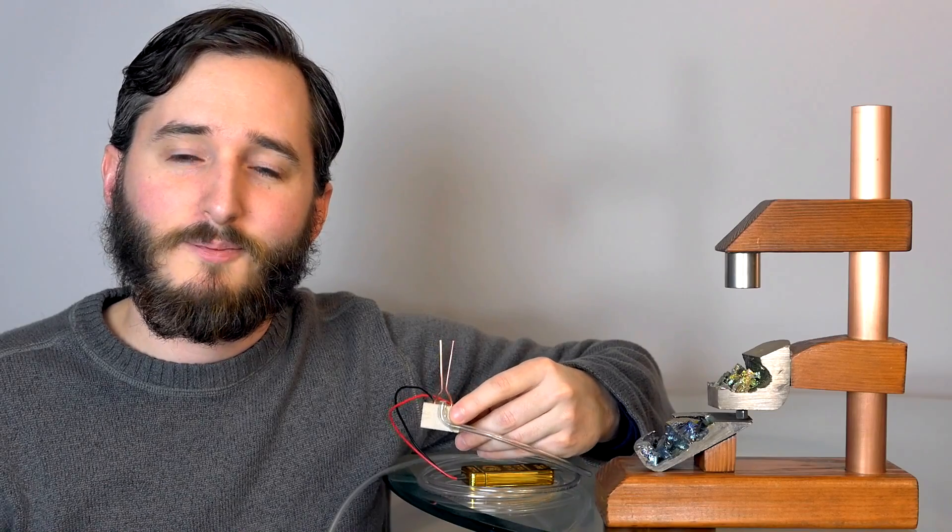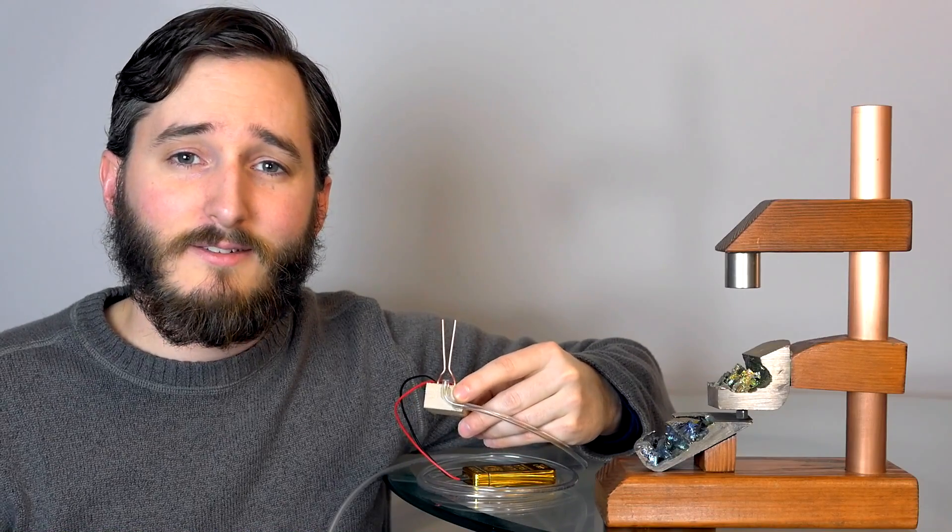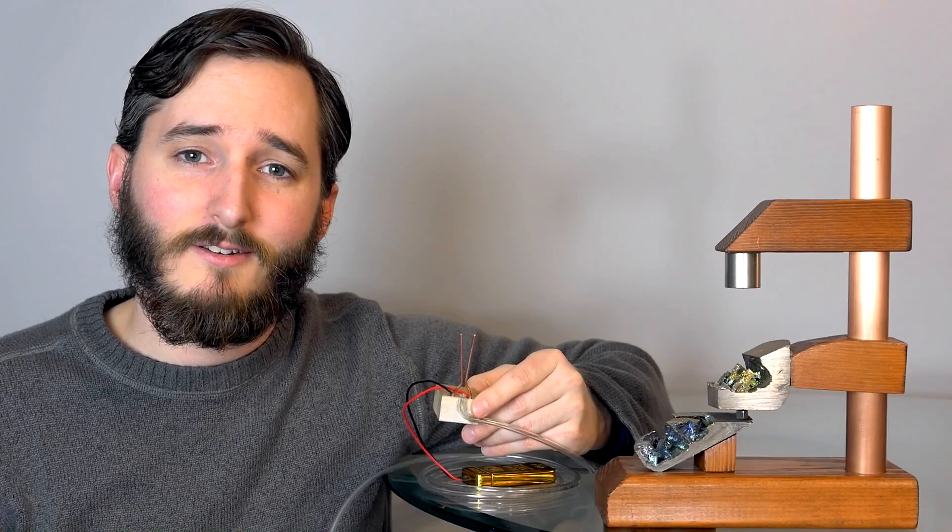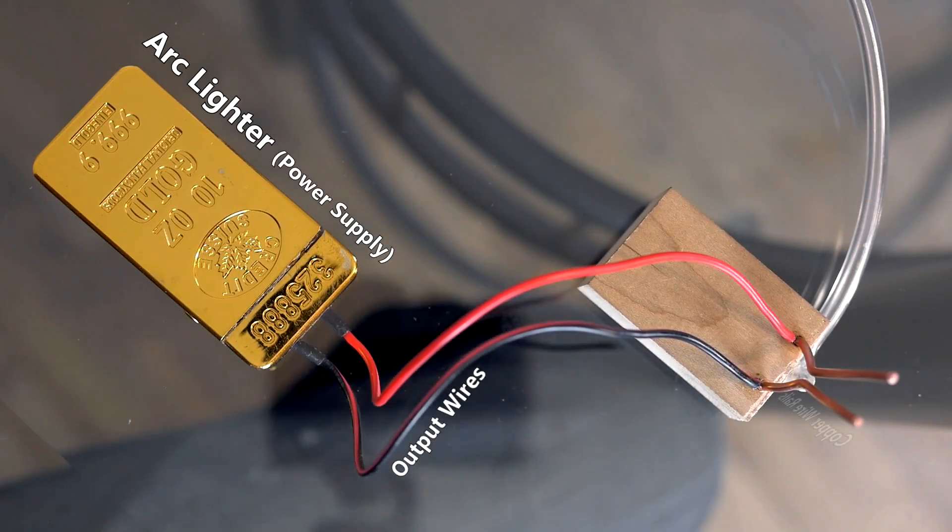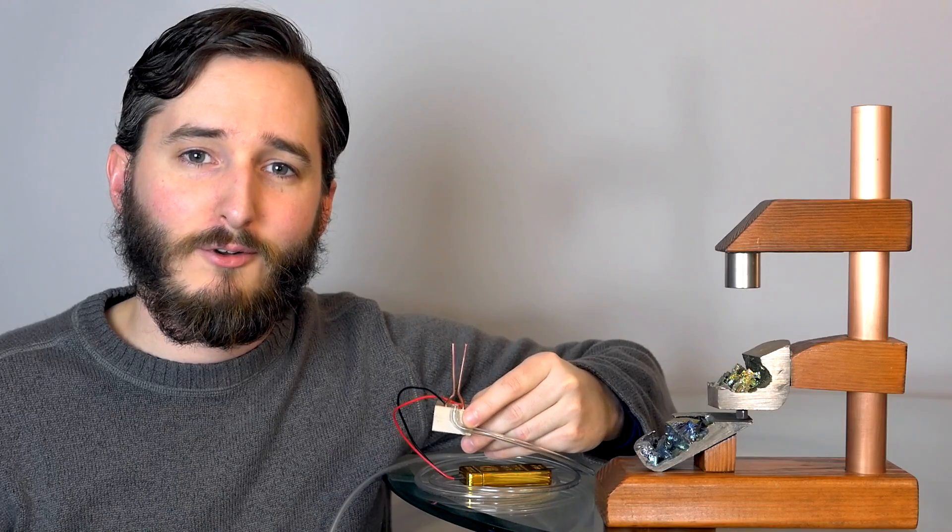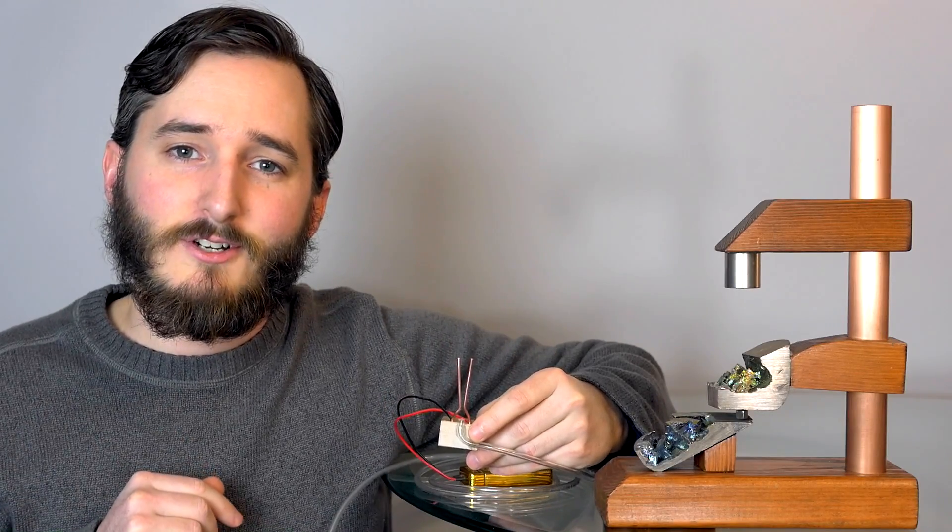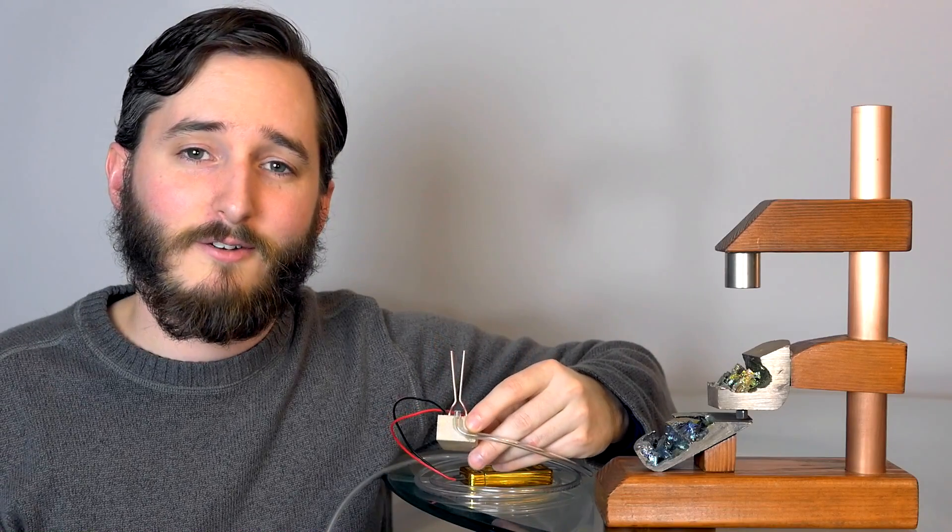There is another difference between this design and a regular Jacob's ladder, and that's that the arc lighter runs on pulsed DC current. The current rises and falls several times a second. A regular Jacob's ladder runs on true DC, or pure DC, meaning that the DC current stays at the same voltage. That helps with the convection as well. It's another reason why this arc ladder design requires the forced airflow.